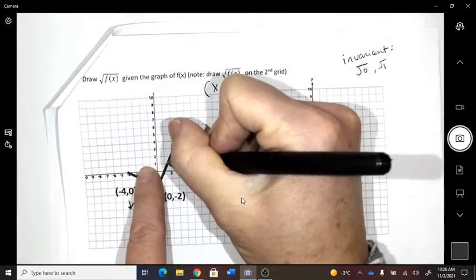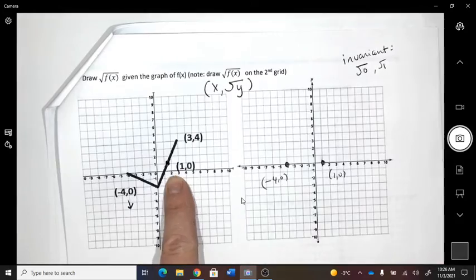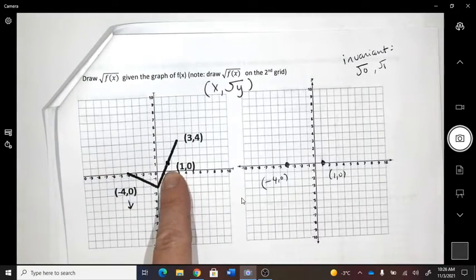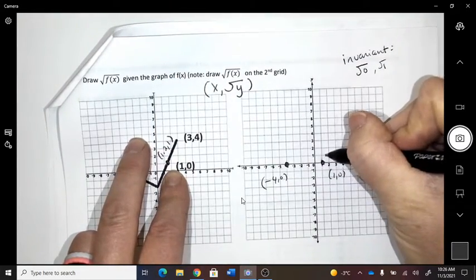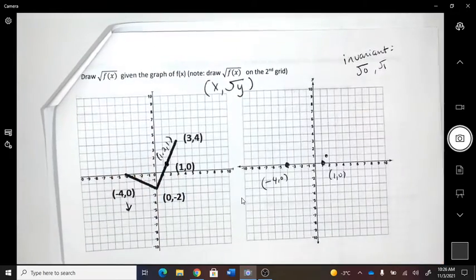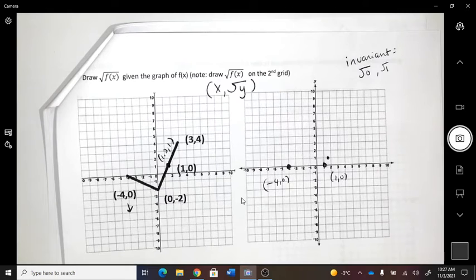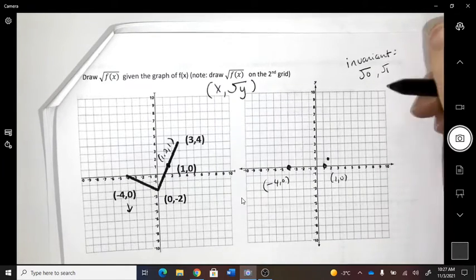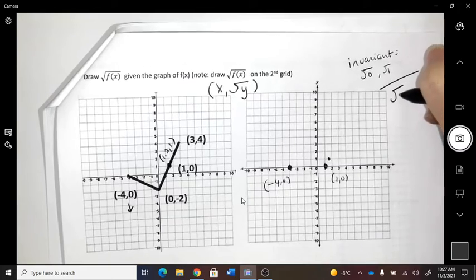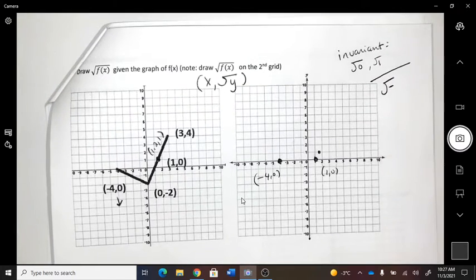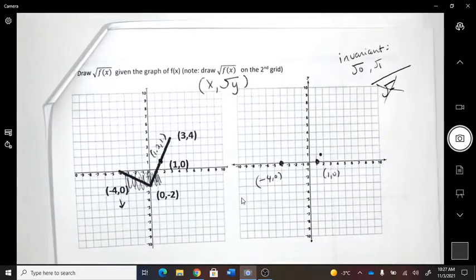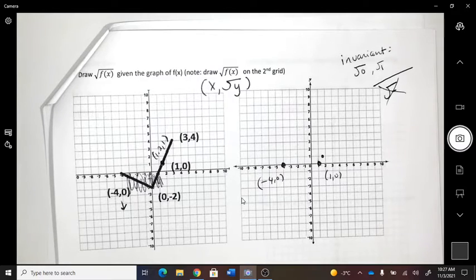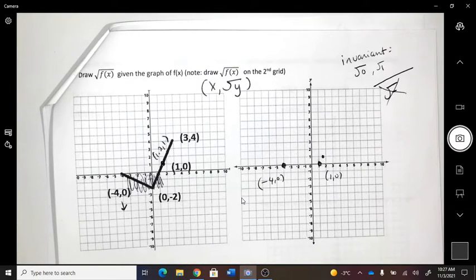And this coordinate, I guess it's not really labeled, but right here, what do you want to say? It's like 1.2 comma 1. So there's all the invariants. Now let's talk about this. What happens when you square root a negative number? It doesn't work. So guess what? All of those points over there are not going to happen.